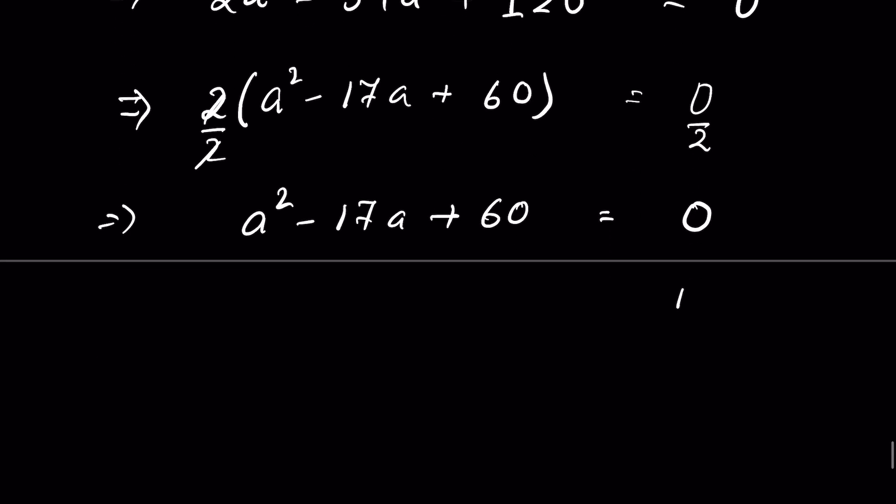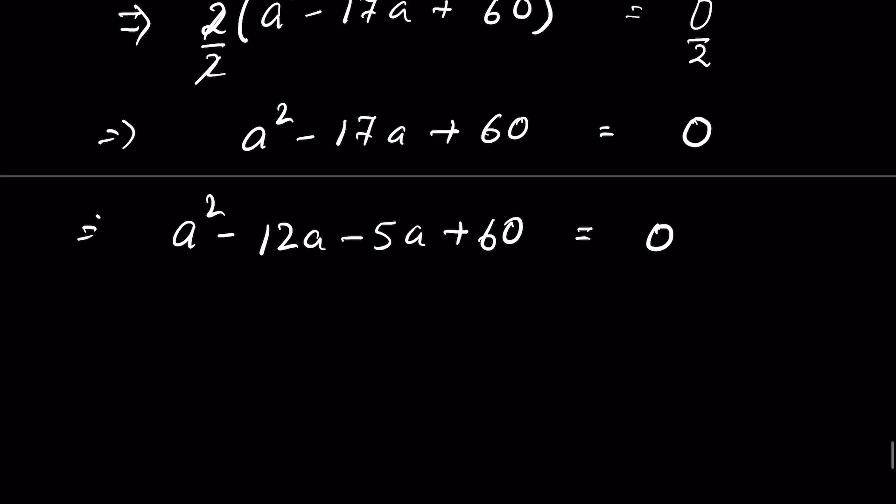This quadratic equation can be factorized. We need two numbers whose product is 60 and whose sum is 17. 12 × 5 = 60 and 12 + 5 = 17. So we can factorize: a² - 12a - 5a + 60 = 0, or a(a - 12) - 5(a - 12) = 0.